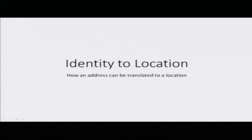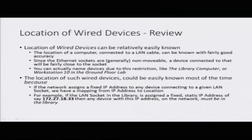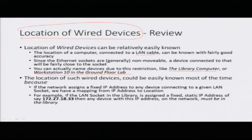Now we are going to talk about identity that can be mapped to location. We have already talked about what identities and addresses are in previous lectures. Now we will look at how these addresses can actually be translated to locations. We will review the location of wired devices — for example, something called a library computer, or workstation 10 on the ground floor. If a computer is connected to a LAN cable and that LAN socket is in a library, we can fix the location of the computer because it is a wired device.